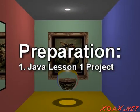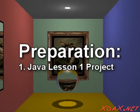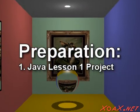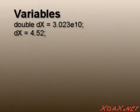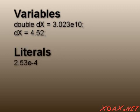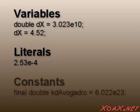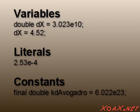For this lesson, you will need a project like the one we created in Lesson 1. We talked about variables which allow us to change their values. We also talked about literals which are constant values that the compiler reads and interprets. In this lesson, we are going to discuss declared constants, which are related to both of those topics.